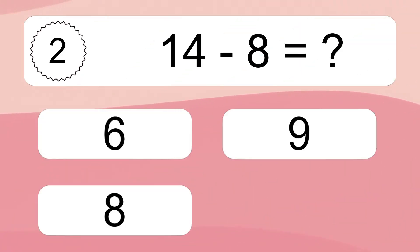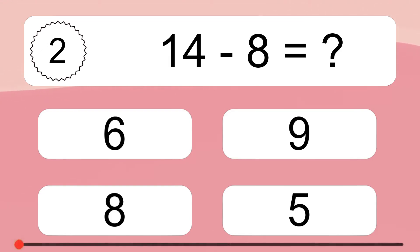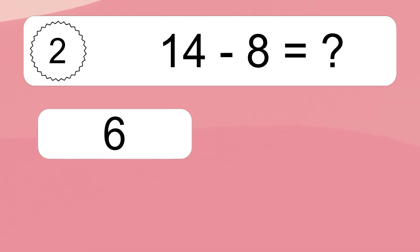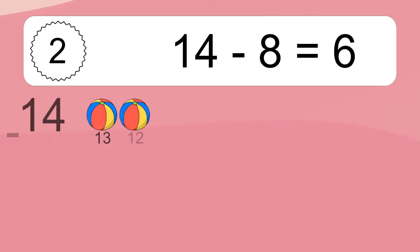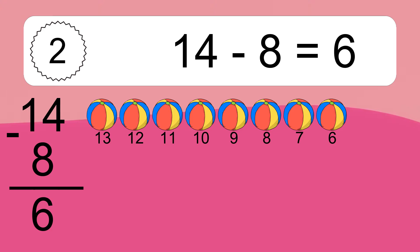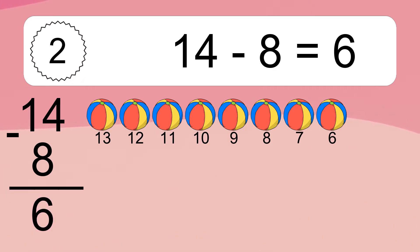14 minus 8 equals what? 14 minus 8 equals 6. Let's count it: 13, 12, 11, 10, 9, 8, 7, 6.